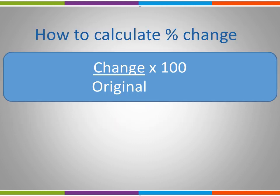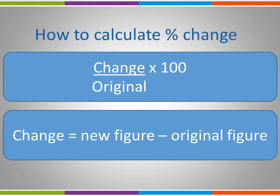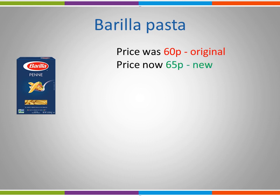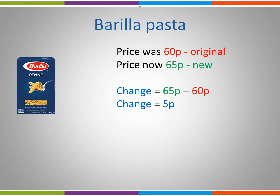So it really is worth practising how to calculate percentage change. The formula is change over original multiplied by 100, or the difference divided by the original multiplied by 100. Change is the new figure minus the original figure. Let's look at a numerical example. Here we have a box of pasta. The price was 60p — that's the original. The price has now increased to 65p — that's our new price. So first we calculate the change: 65p minus 60p gives us a change of 5p. We then take the change of 5, divide it by the original of 60, and multiply it by 100. We now have our percentage change of 8.3%, which we can round to a percentage increase in price of 8%.